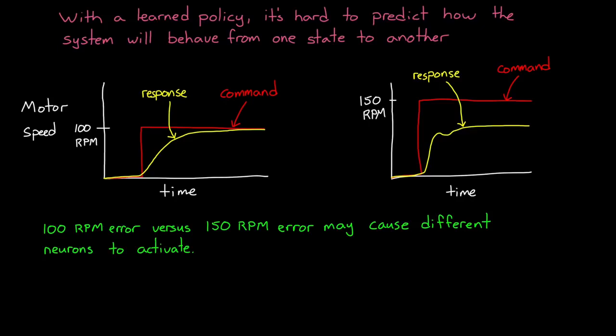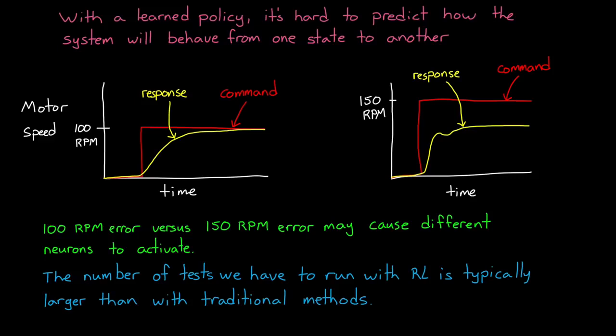Now, with traditional methods, if the motor behaves linearly, then we have some guarantees that all step inputs within the linear range will behave similarly. We don't need to run each of those tests independently. So, the number of tests we have to run with an RL policy is typically larger than with traditional methods.